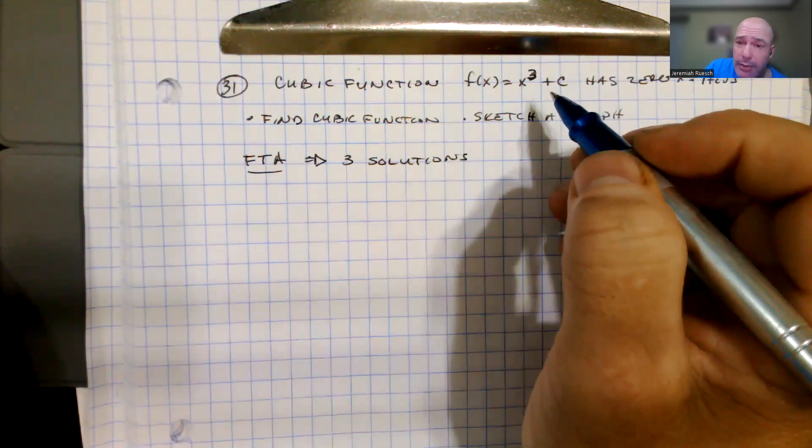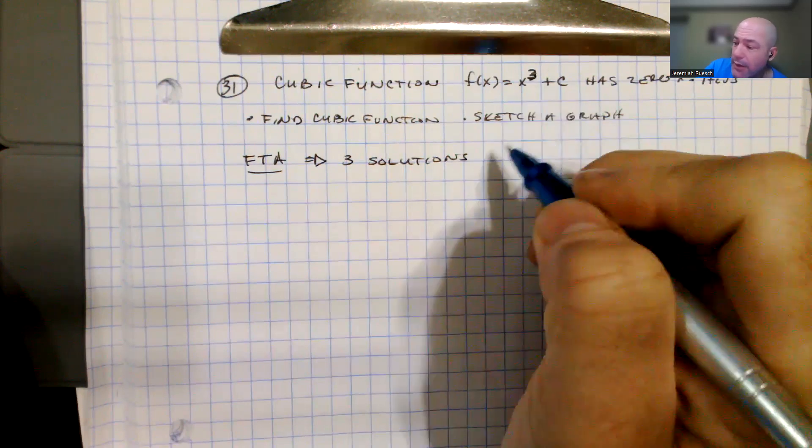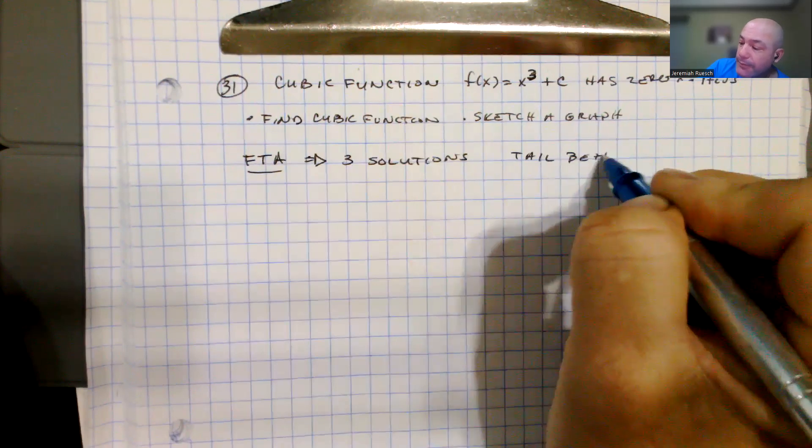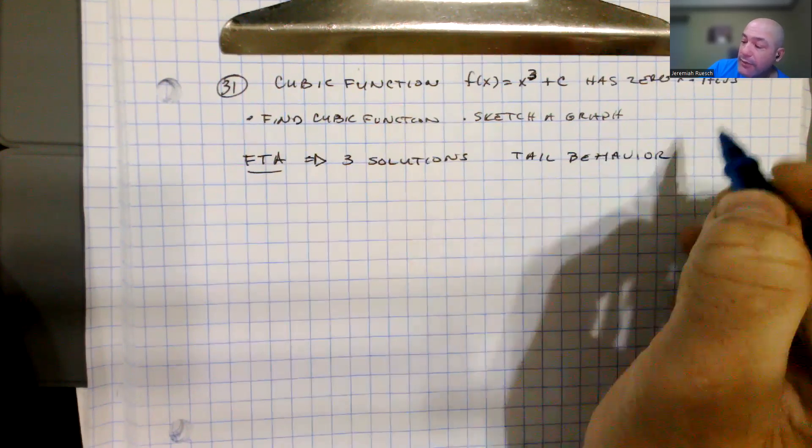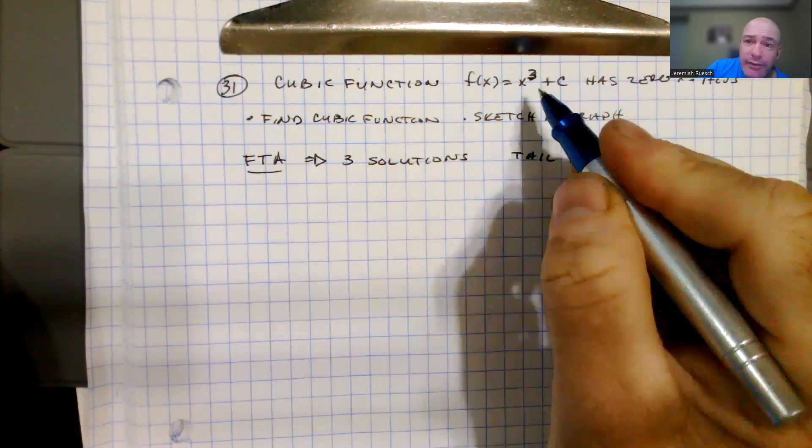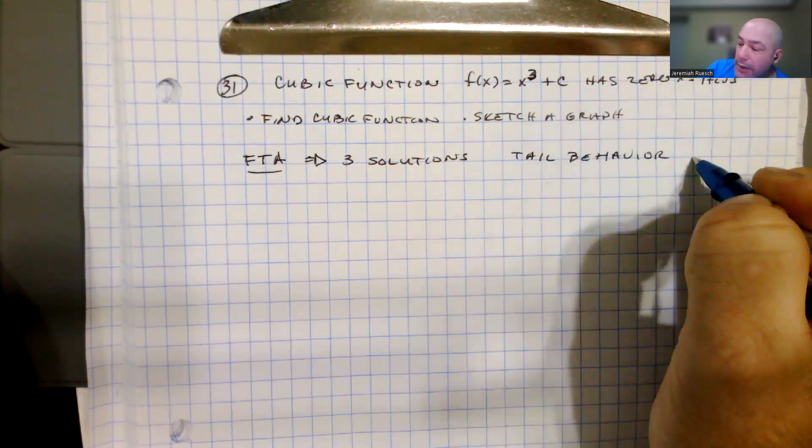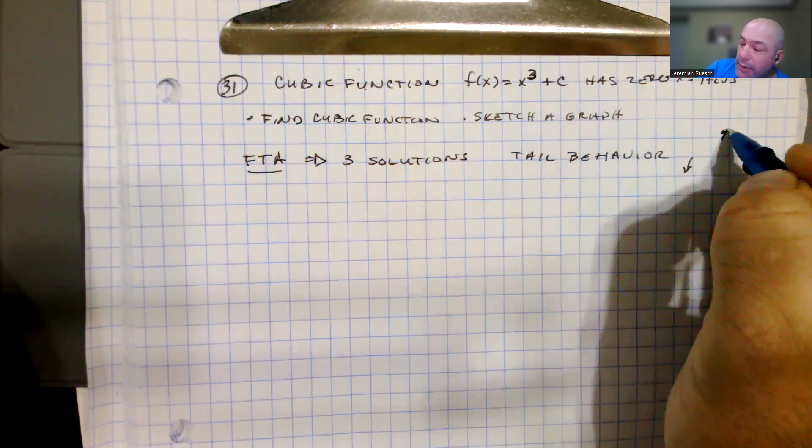They may not all be real, but there are three of them. Another thing to notice about the tail behavior: since this is an odd polynomial, odd polynomials do one of two things. Either the tails, the ends of the functions, look like this, where one's going to positive infinity and one is going to negative infinity,